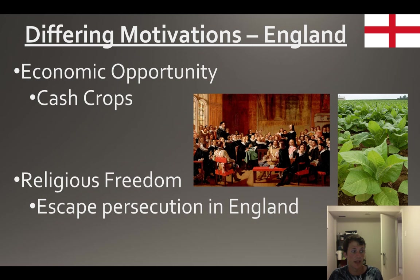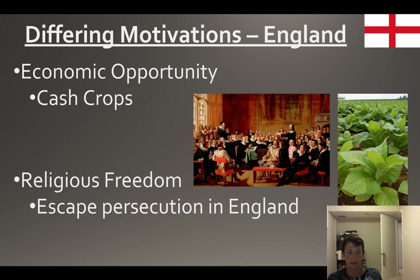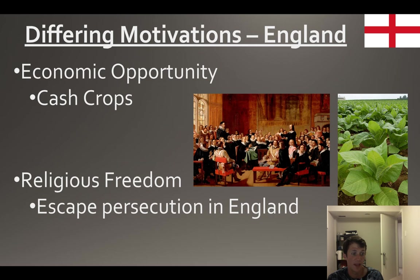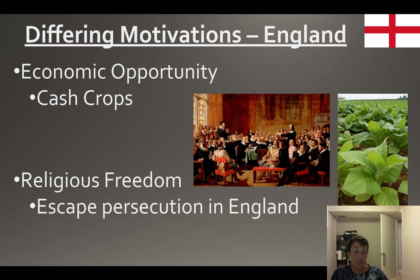England is the big one you need to know. The big thing they're looking for is economic cash crops - cash crops are super important. Without tobacco, Jamestown would not have flourished. In addition to the Virginia Colony, you're going to have the Massachusetts and Plymouth colonies, which are religiously based.